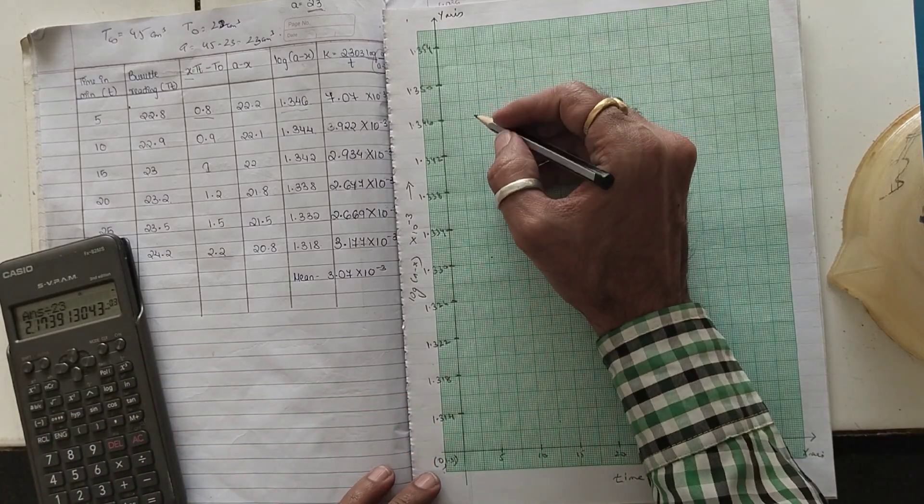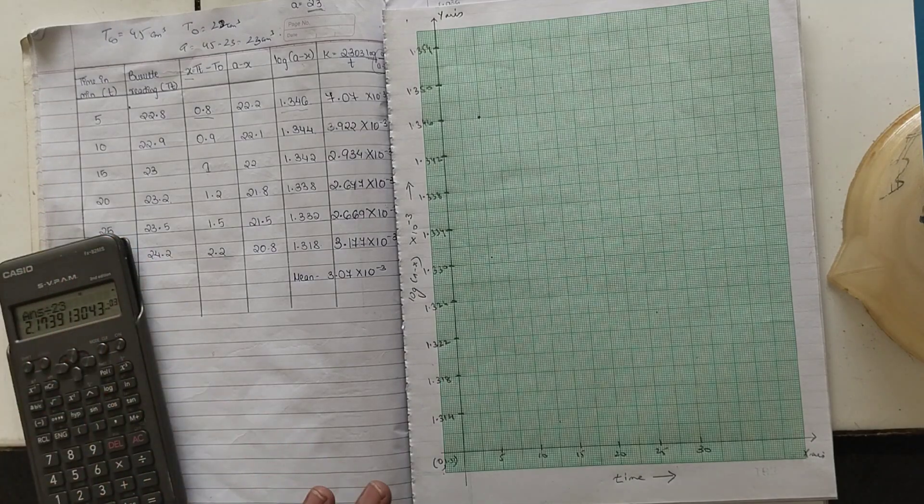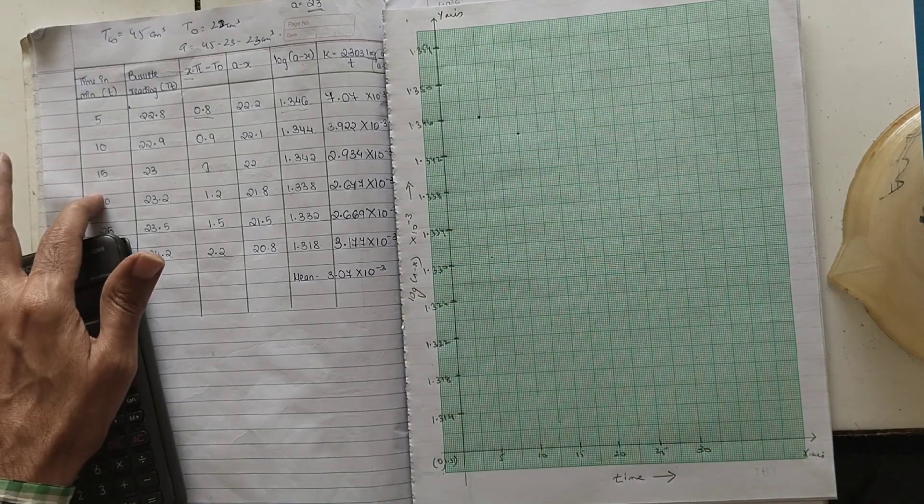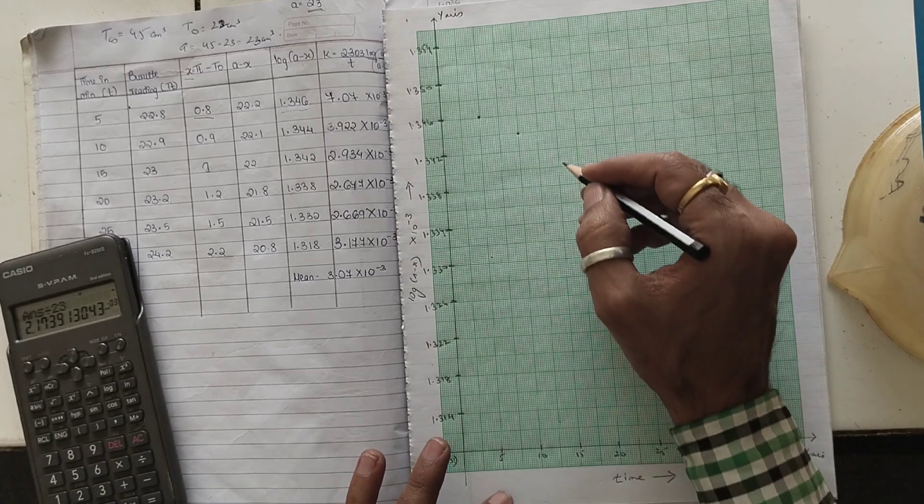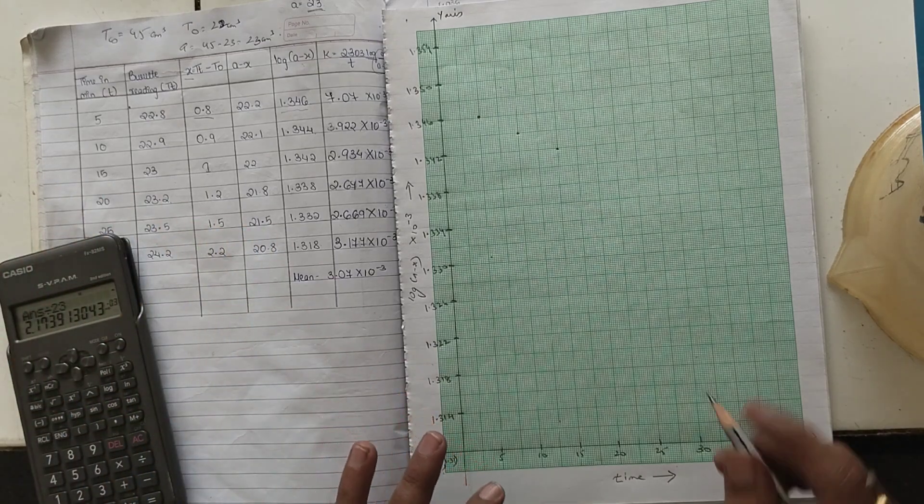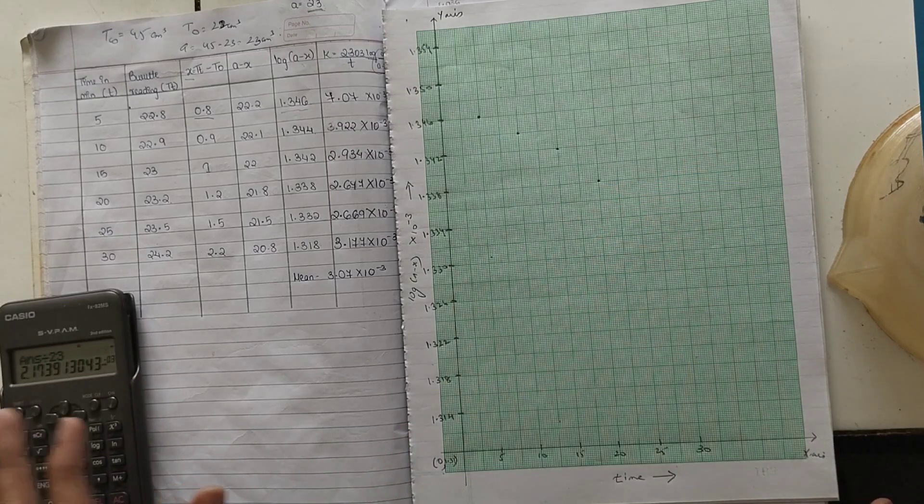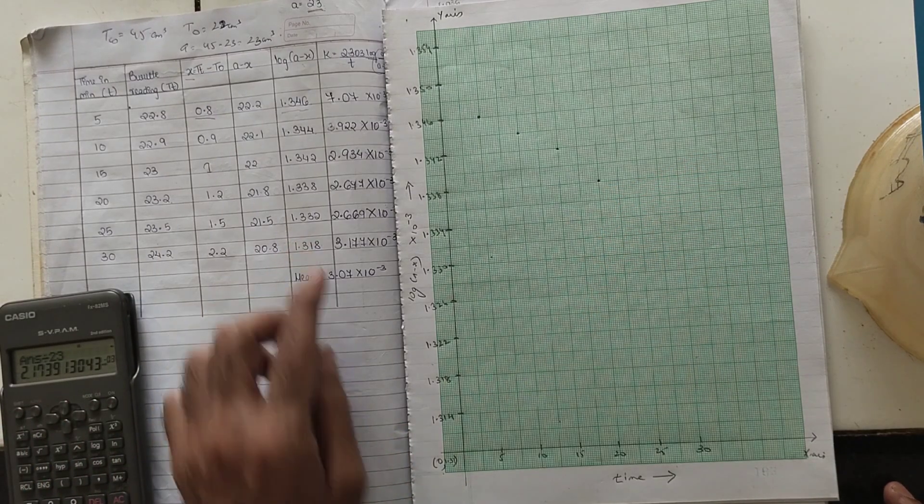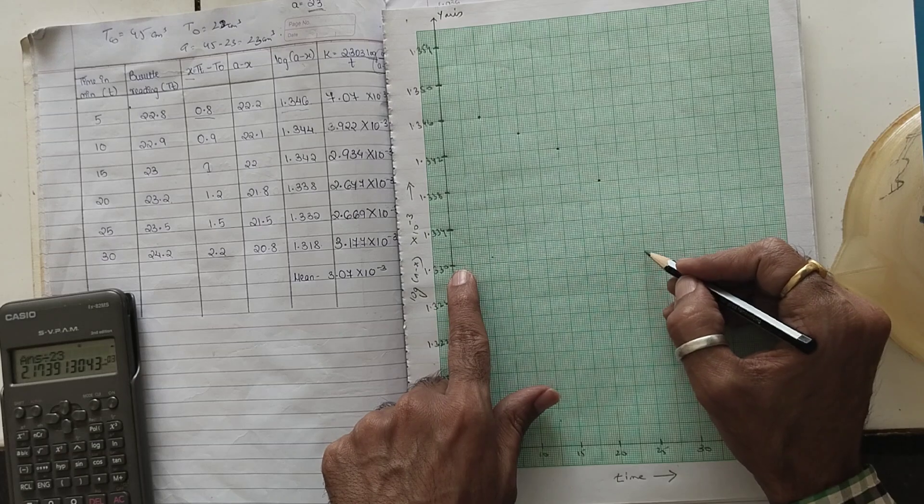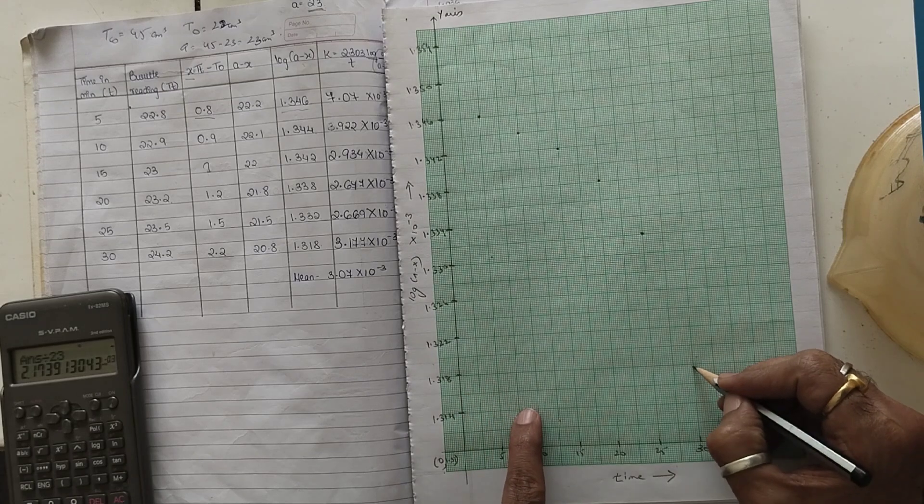Our graph will lie into this region, covering around 70 to 80 percent of the graph paper. That is the ideal way. This is the way you have to select - first select the range, divide by the total number of squares, and now start plotting the graph. For 5 it is 1.346, so you are going to plot it over here. Next for 10 it is 1.344, for 15 it is 1.338.